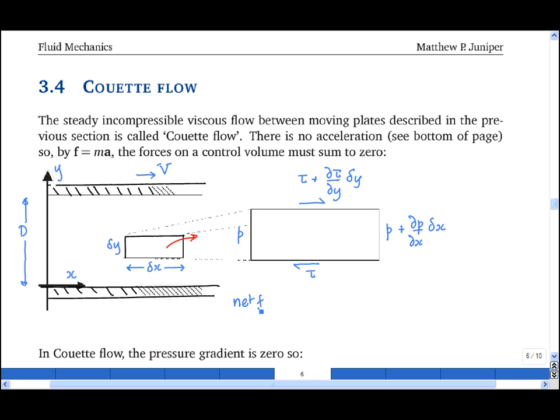Therefore, the net force on this control volume is equal to d tau by dy times delta y times delta x minus dp by dx times delta x times delta y. And if there is no acceleration, which I shall show later, that must be equal to zero.